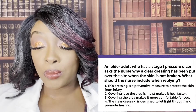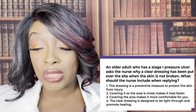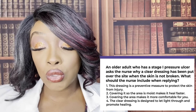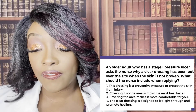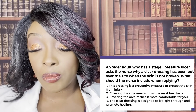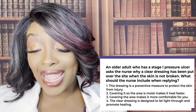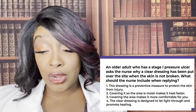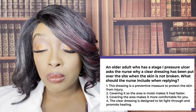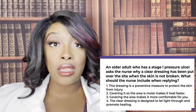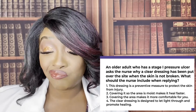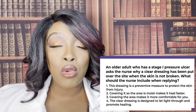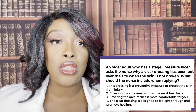An older adult with a stage one pressure ulcer asks the nurse why a clear dressing was placed over the site when the skin is not broken. What should the nurse include in the reply? One, it's a preventative measure to protect the skin. Two, covering it keeps the area moist and makes it heal faster. Three, it makes it more comfortable. Or four, it lets light through to promote healing. The correct answer is two — moist skin promotes faster healing than dry skin, which is why the dressing is applied.